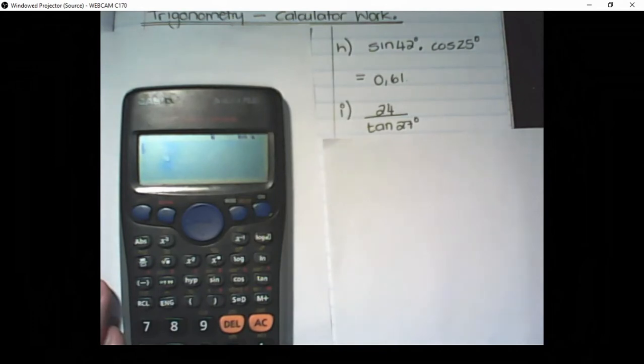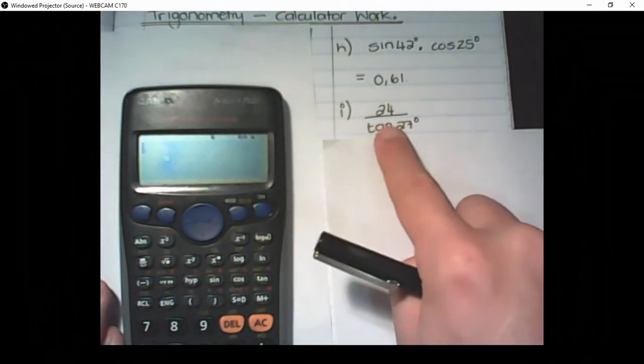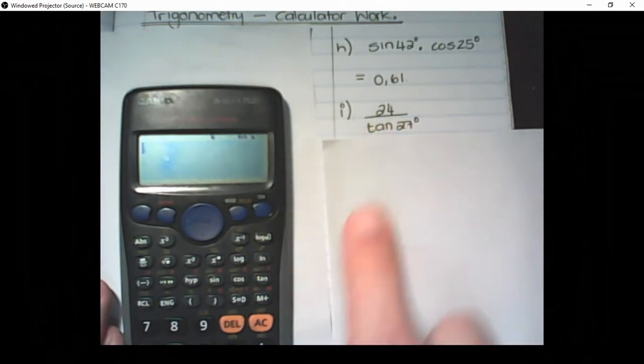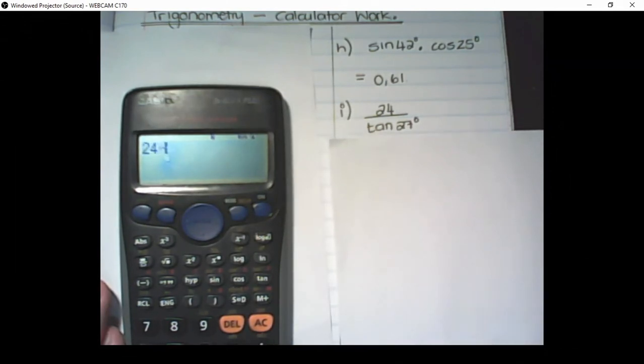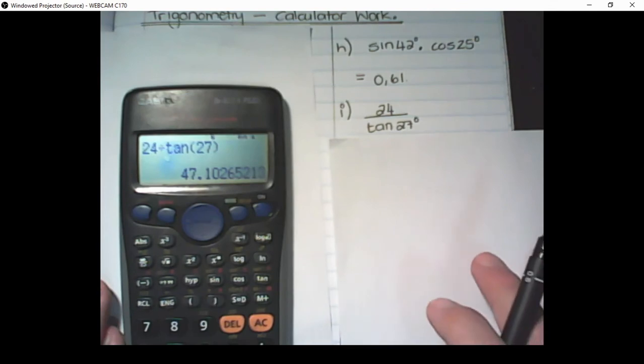We can also divide numbers with the trig ratio. So in this case we have 24. Divide by the tan of 27. Close the bracket. That is equal to 47.1.